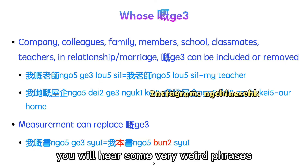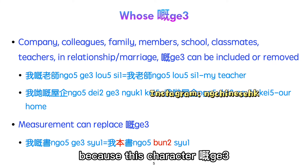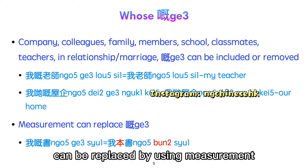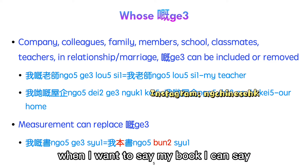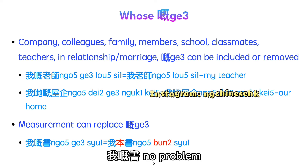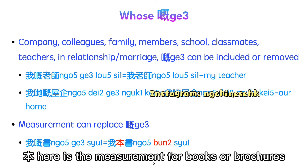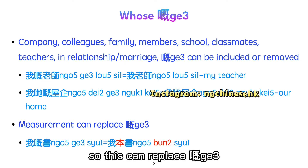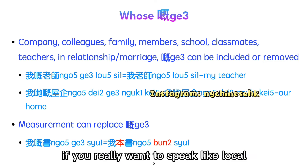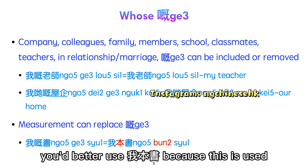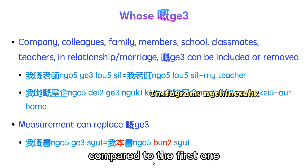Sometimes you will hear some very interesting phrases from local people, because this character can be replaced by using a measurement word. When I want to say 'my book,' I can say 'ngo ge shu' — no problem. But a lot of people will say 'ngo bun shu.' 'Bun' here is the measurement word for books or brochures, so it can replace ge. If you really want to speak like a local, you'd better use 'ngo bun shu,' because this form is used much more commonly.